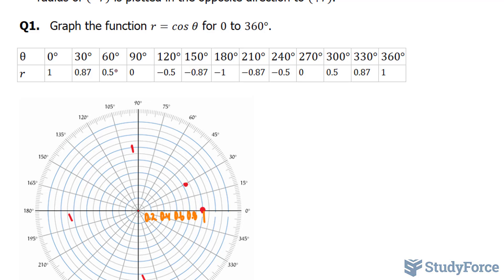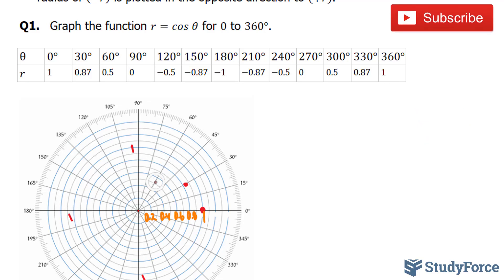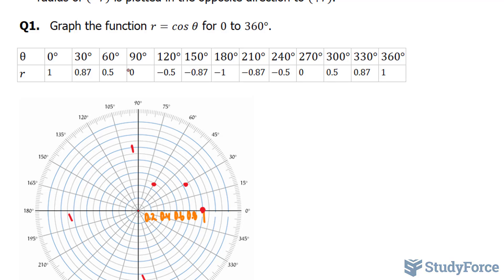My next point is 60 degrees, so I locate 60 here, and that's going to be half the distance of 1, which is approximately here. My next point is 90 degrees and 0, which means we'll have a point right at the center. I'm going to go ahead and connect these points with a curvy line, and I'm assuming that if I picked an angle between 60 and 30, I would get a point right above the 0.2 ring. So what we have formed here is a semicircle.